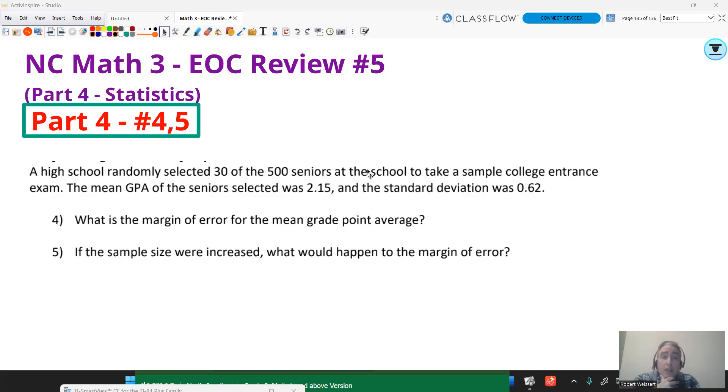All right, this question. A high school randomly selected 30 of the 500 seniors at the school to take a sample college entrance exam. The mean grade point average of the seniors selected was 2.15 and the standard deviation was 0.62. So we represent mean with this symbol and standard deviation usually with S or S of X for that symbol here. The question for four says, what is the margin of error for the mean grade point average?